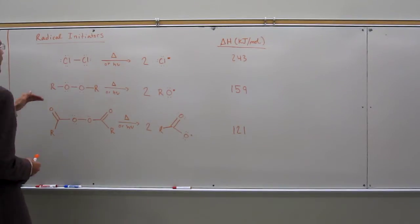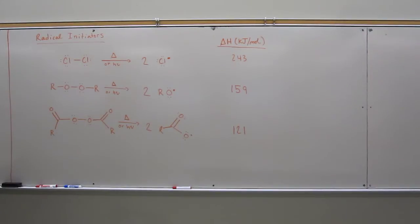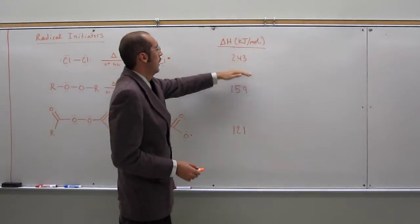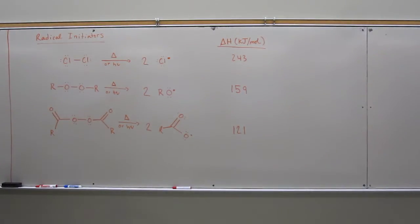Chlorine is more reactive, and we'll talk about the different halogens and their reactivity in a little bit, but chlorine's the one that you see used most often, and it's due to its very weak bond there. You can see it's 243 kilojoules per mole.